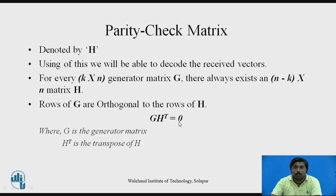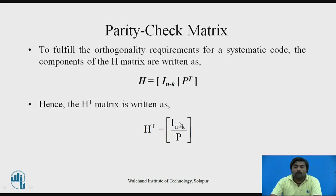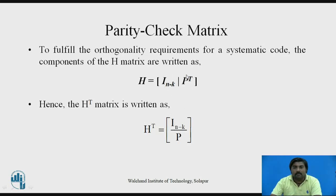To fulfill the orthogonality requirement of a systematic code, the components of H are written as H equals the combination of the identity matrix and the transpose of the parity array. If you recall the generator matrix equation, the generator matrix is a combination of the parity array and the identity matrix. Here the difference is that the identity matrix is combined with the transpose of the parity matrix.